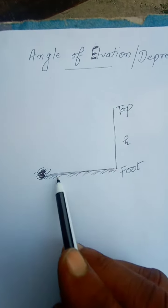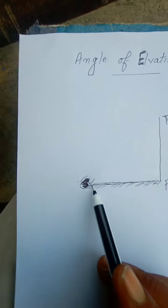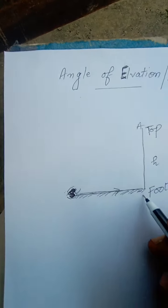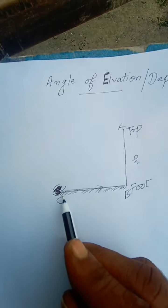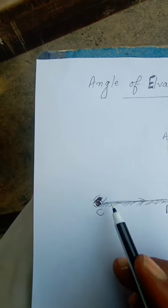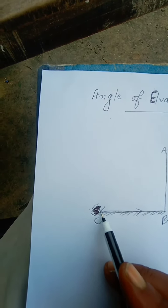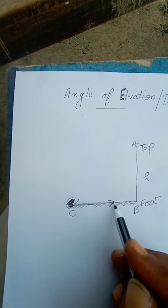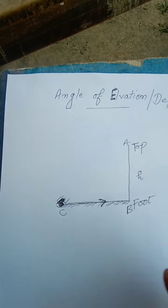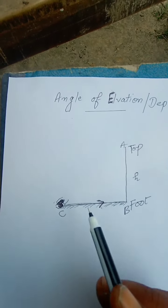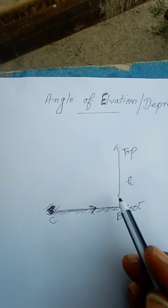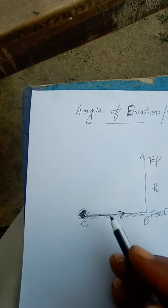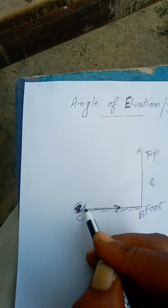Suppose that your eyes are kept on the earth's surface and you are seeing the earth's surface, then your line of sight — suppose this is point A, this is point B, and this is point C. CB is earth's surface and your eye is on the earth's surface looking along the earth's surface. So here, the line of sight is along the earth's surface.